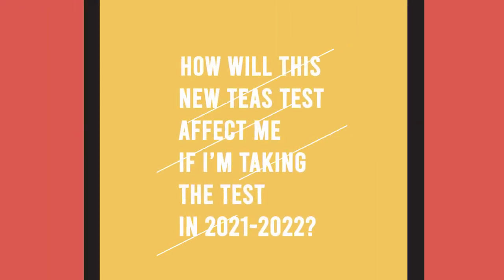One big question people have is: how does this affect me if I've already taken the TEAS 6 this year, or I'm taking it this summer, but my school is changing to the TEAS 7? Do I need to retake it? The answer is that most schools have a grace period where they accept both versions.